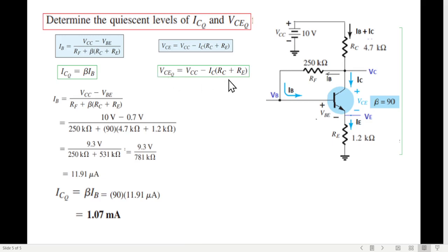Now we will do this one, VCEQ. So VCC is 10. IC or ICQ, we have found from here now, is 1.07 milliampere. RC is 4.7 kΩ. RE is 1.2 kΩ. So solving. And further solving, we find VCEQ to be 3.69 volt.